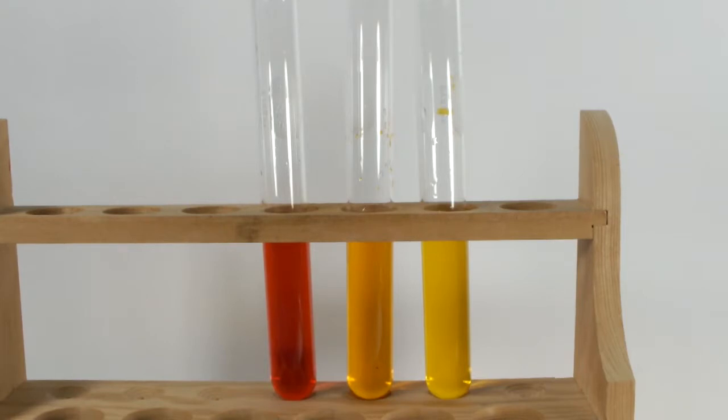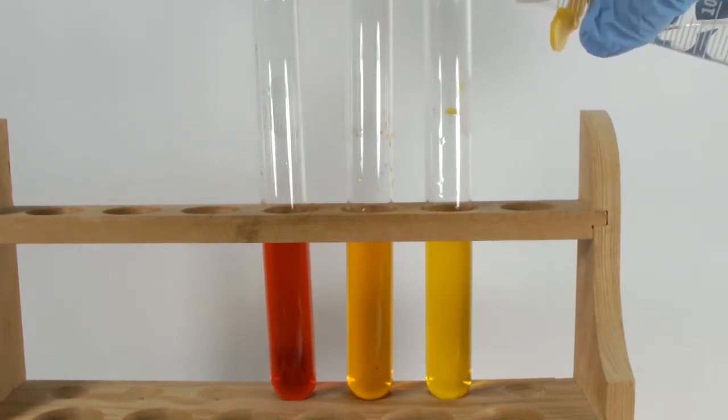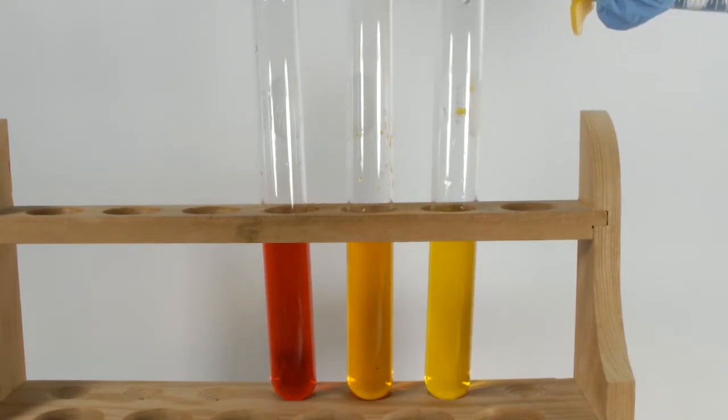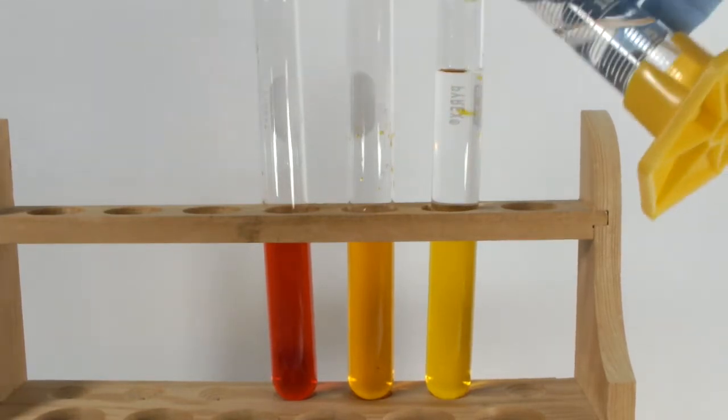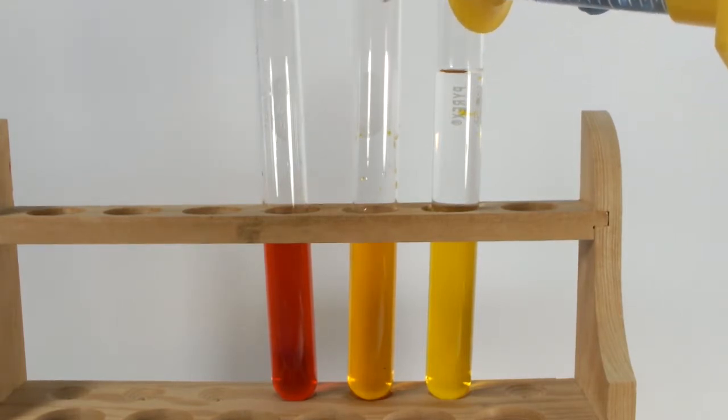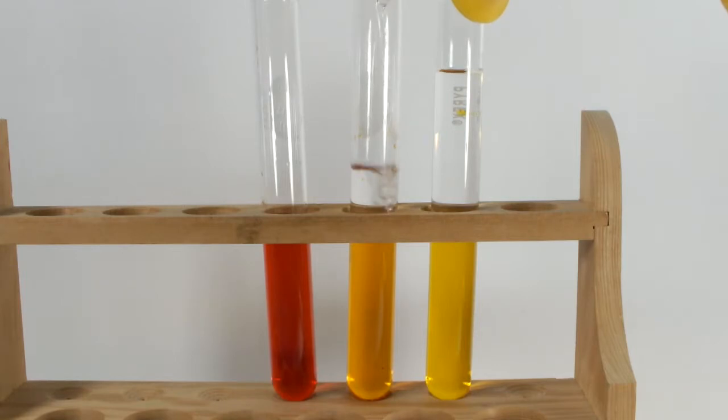The next step is to add 10 milliliters of petroleum ether to each of the three test tubes. Petroleum ether isn't chemically an ether. It's mainly a mixture of hexanes, cyclohexane, and naphtha, which itself is a mixture of all kinds of stuff.